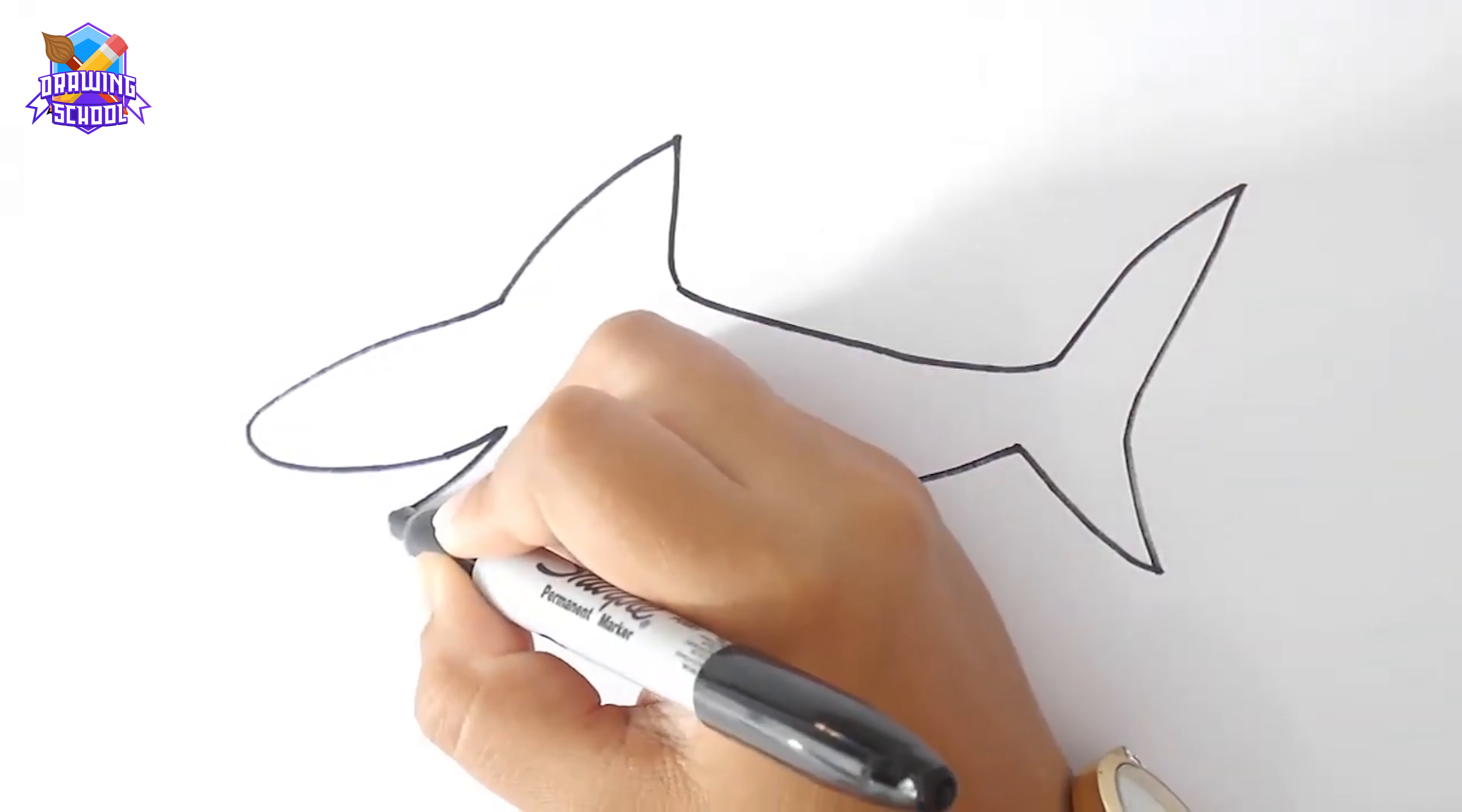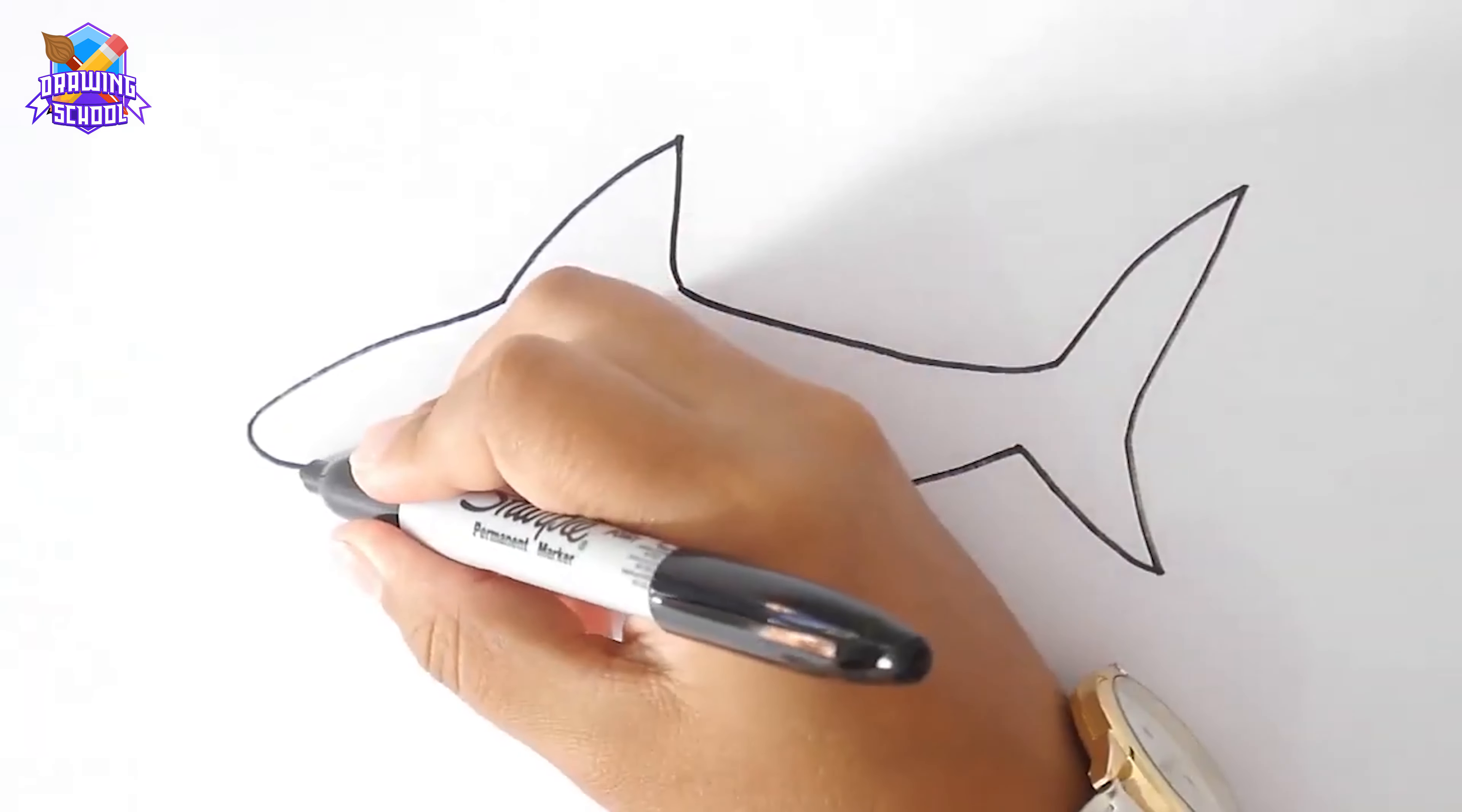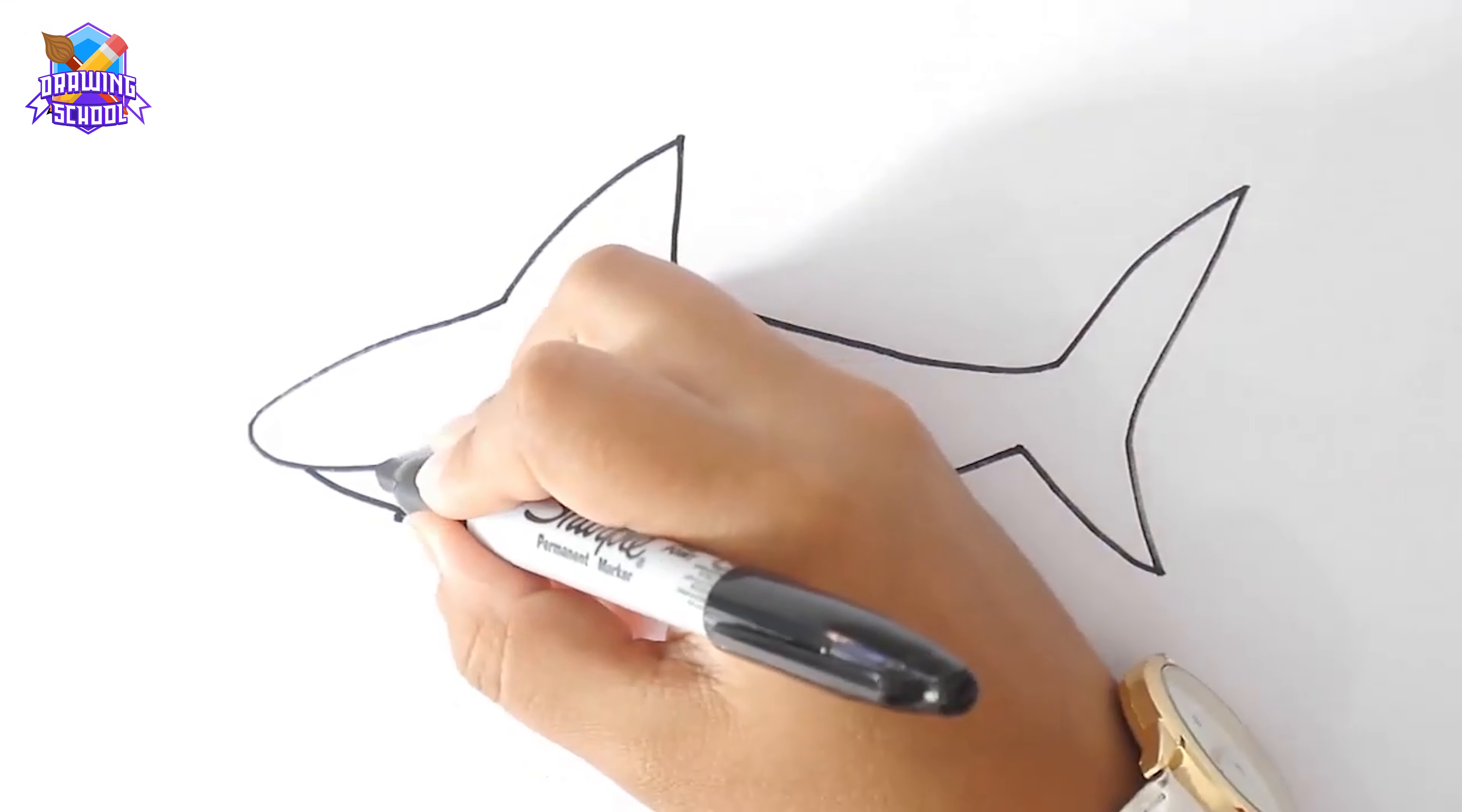Now we're going to draw the head of our shark with a curved line like this. The mouth. And we close it.